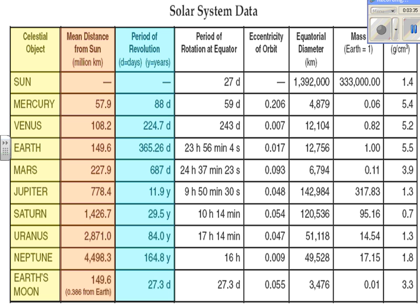The next column is the period of rotation at the equator — essentially one full turn on a planet's axis. The inner planets have a longer period of rotation compared to the outer planets. One unique piece of information: Venus has a period of rotation of 243 days, which is actually longer than its period of revolution of 224.7 days — that's a question that might appear on the Regents. Earth is just under 24 hours, Mars has a similar rotation to Earth, and past Mars the outer planets have a shorter period of rotation.